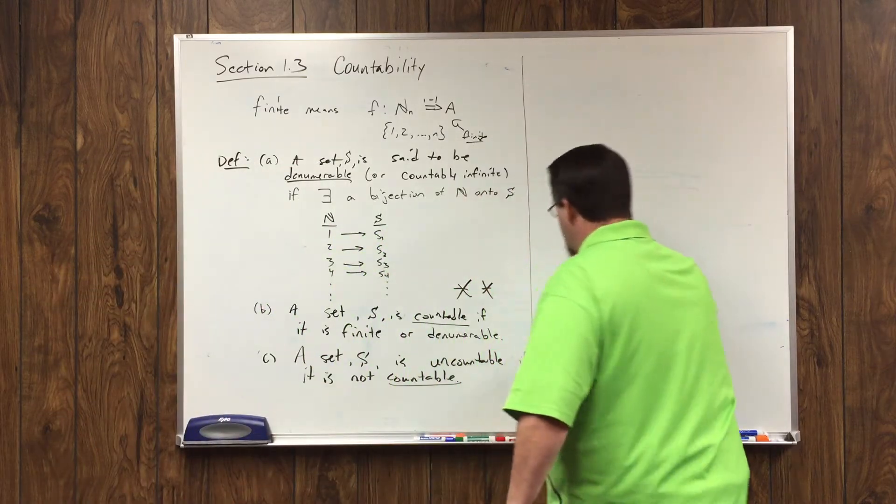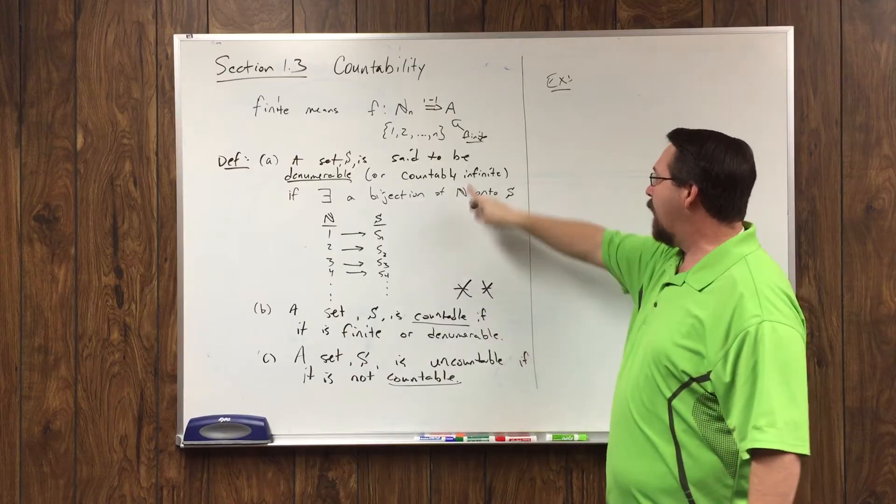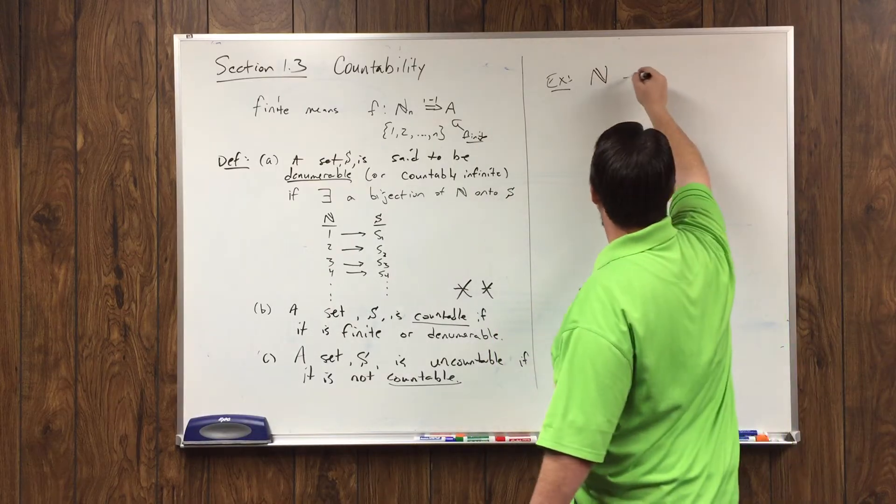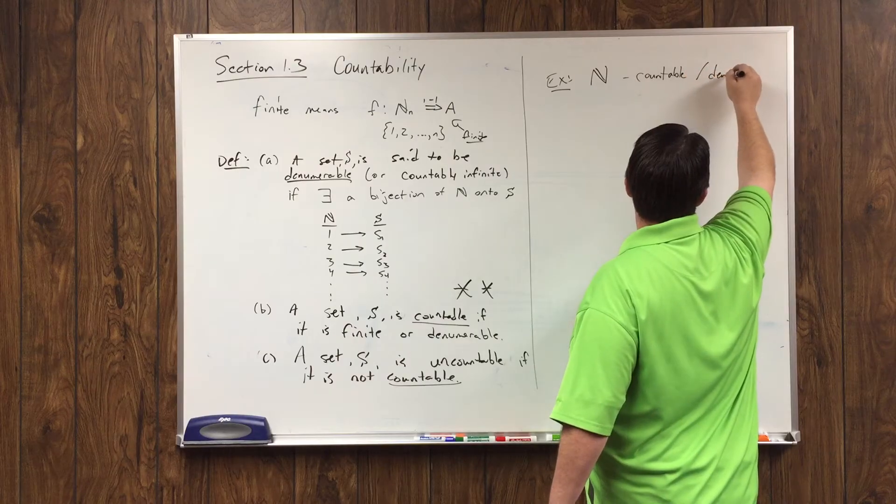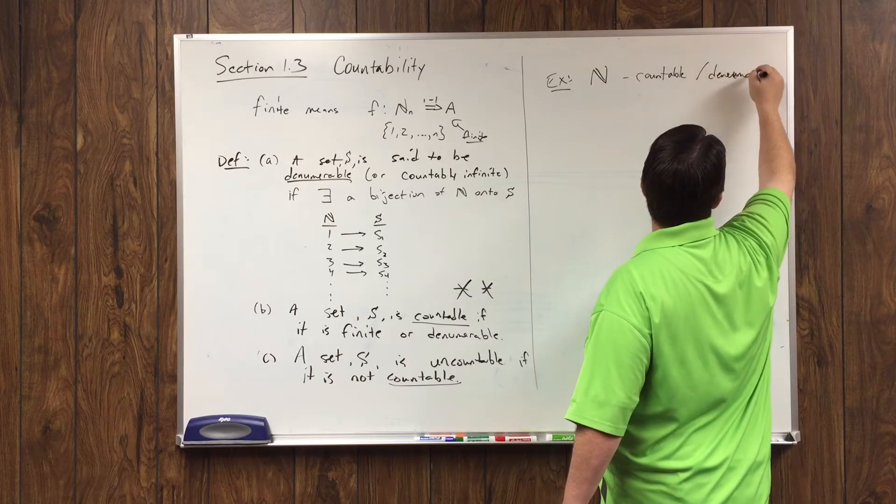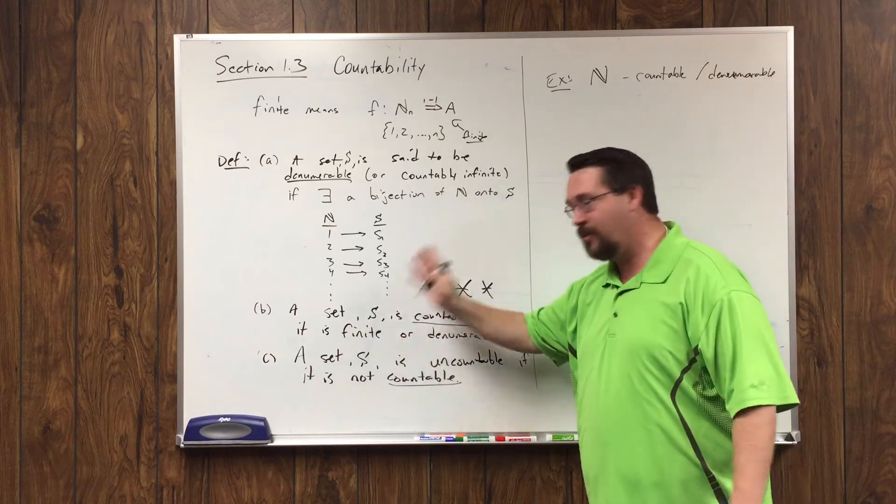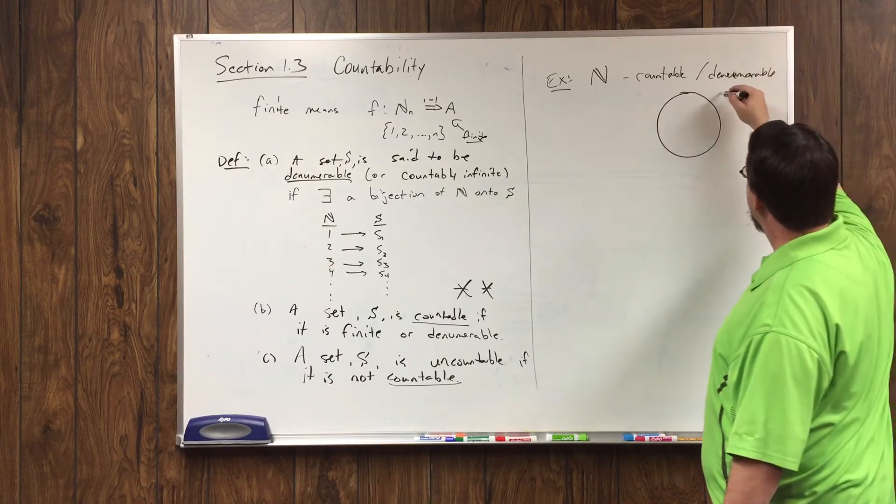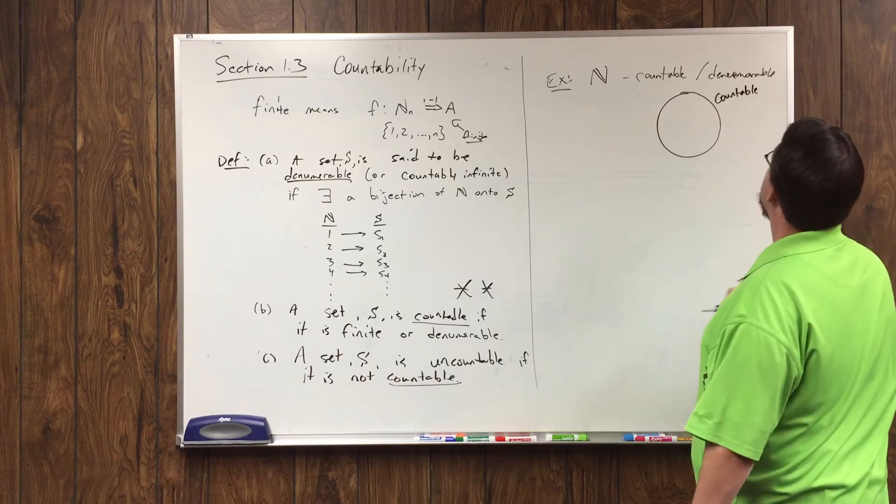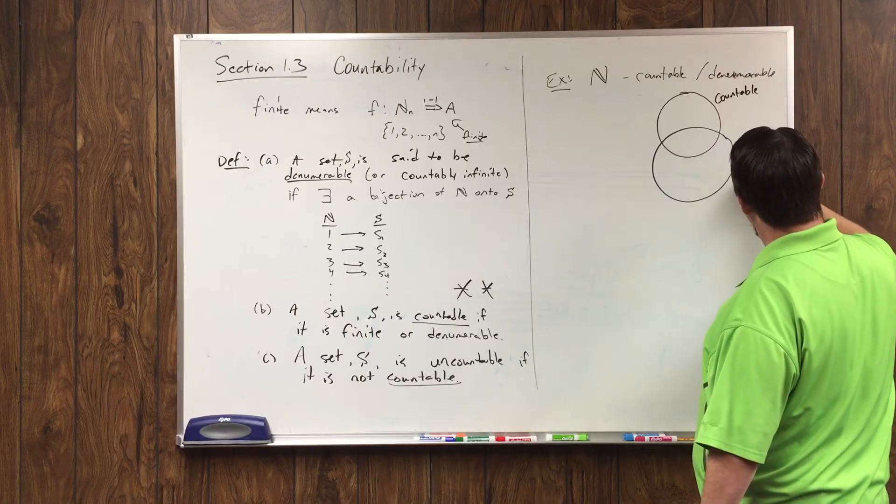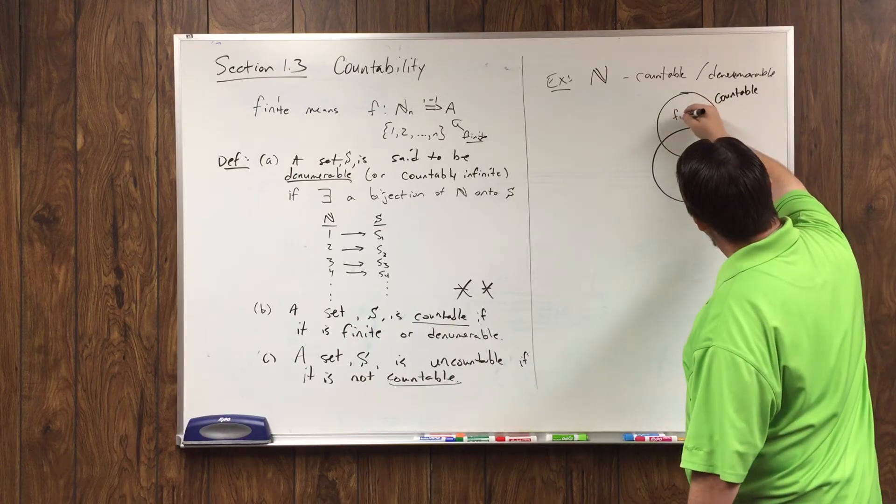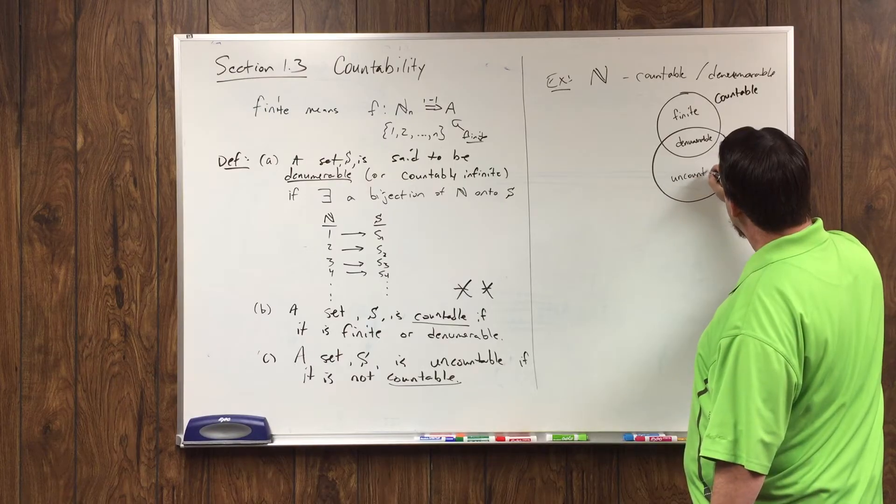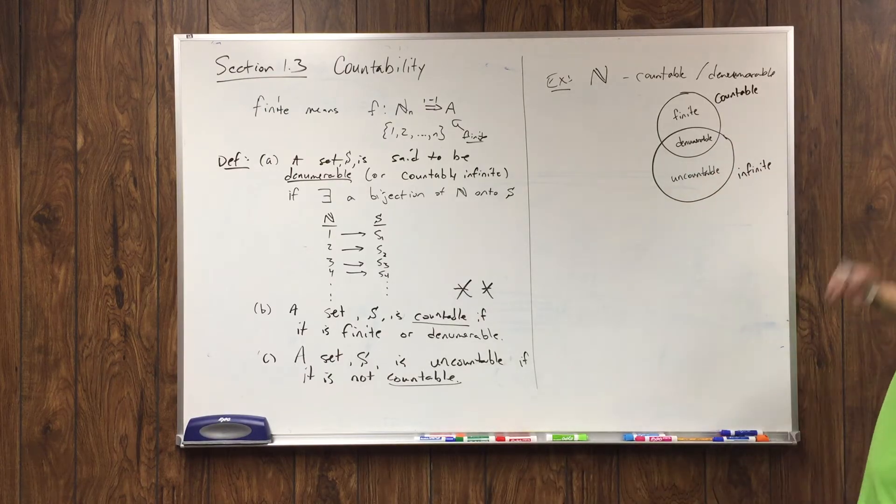Let's think of a couple of examples of sets that would be countably infinite or denumerable. First of all, obviously, that set right there is countable or denumerable. It's denumerable because it's infinite. It's countable because it is denumerable. Maybe it helps to see this kind of picture here. If I were to make a set of all countable sets and make a set of all infinite sets, what's up here is finite, what's in here is denumerable, and what's out here is uncountable. So that's the relationship of those terms.